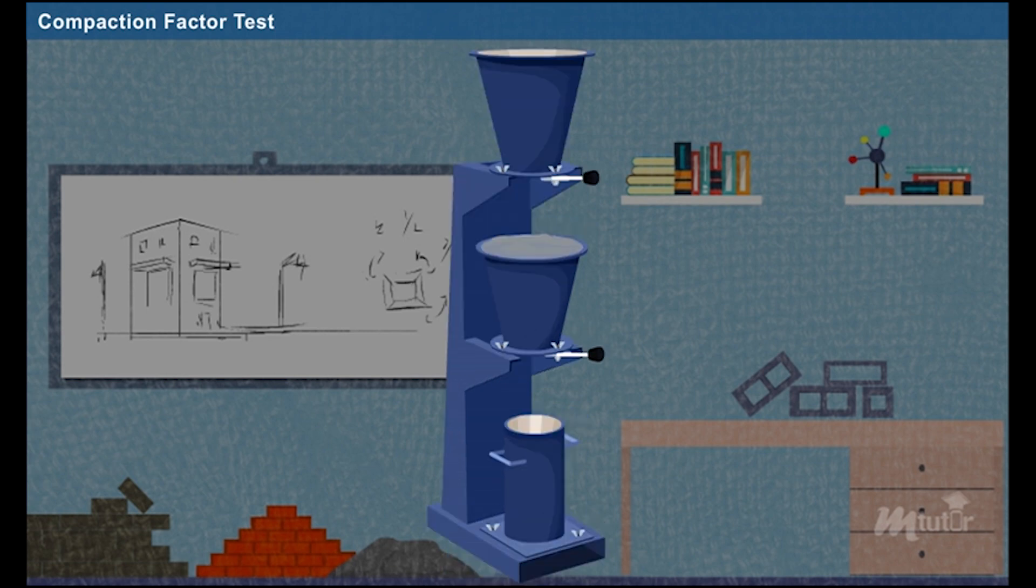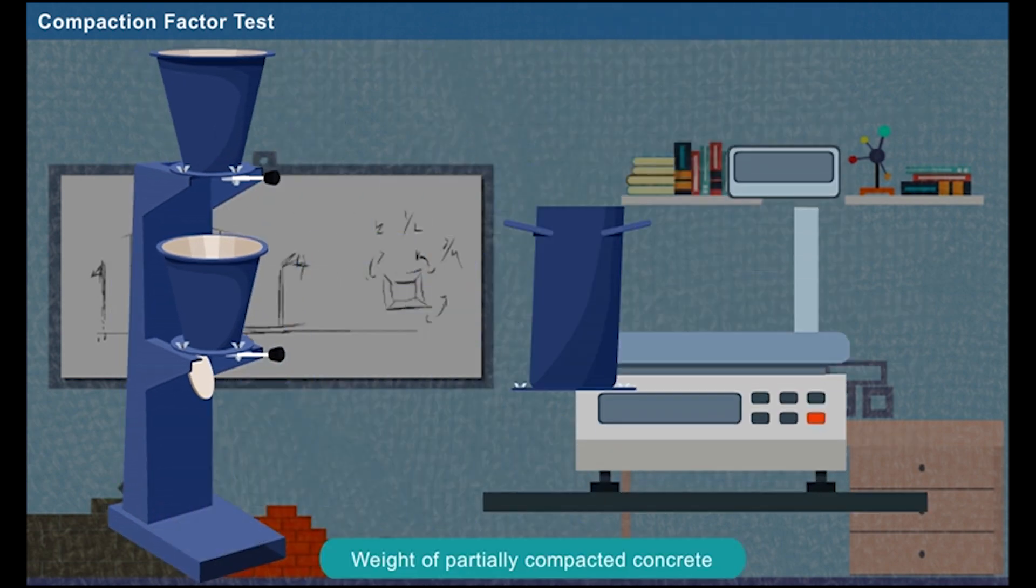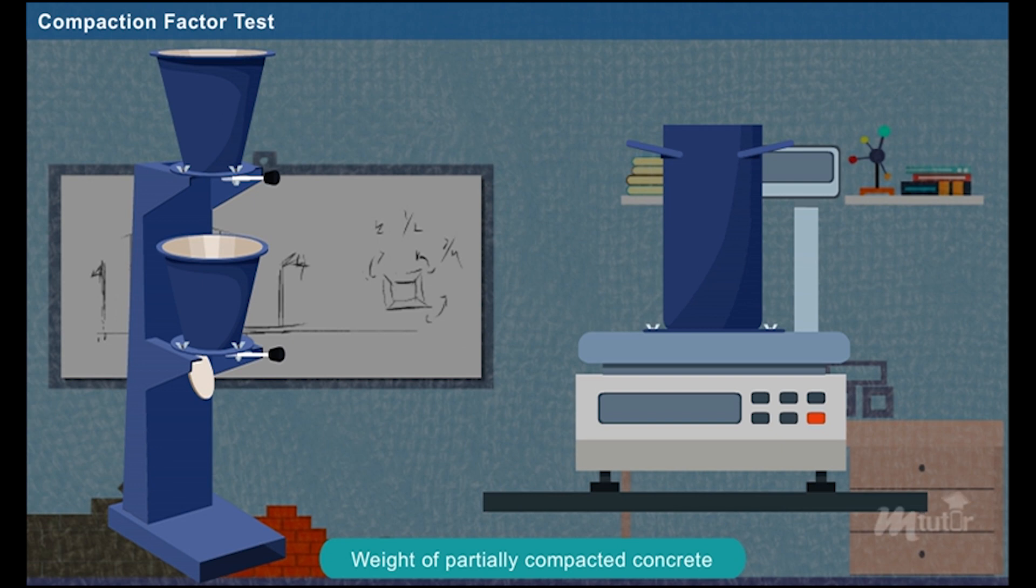When all the concrete has fallen on the bottom hopper, remove the bottom hopper's trap door and let the concrete fall into the cylinder. When the bottom cylinder is filled with concrete, remove the excess concrete from the top of the cylinder using the trowel. Then, clean the sides of the cylinder properly. Then, measure the weight of the cylinder with partially compacted concrete, i.e. W2 kilograms.